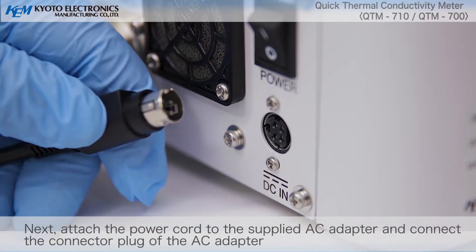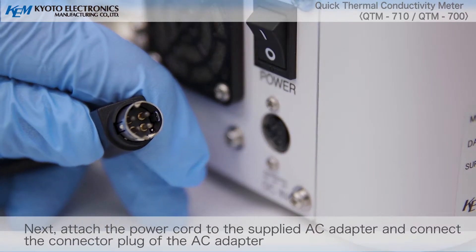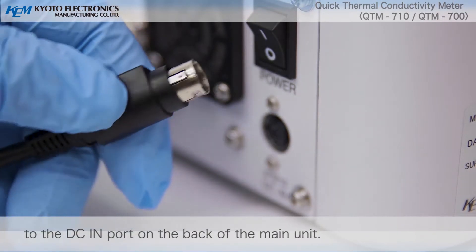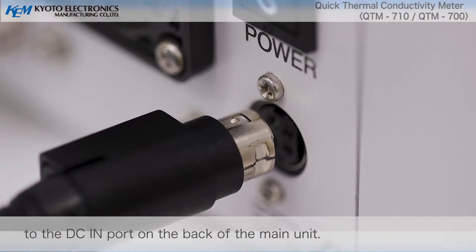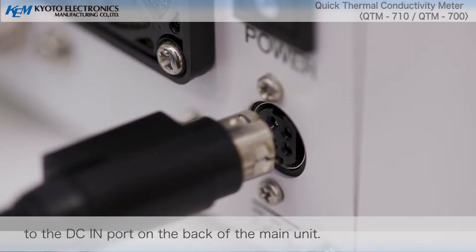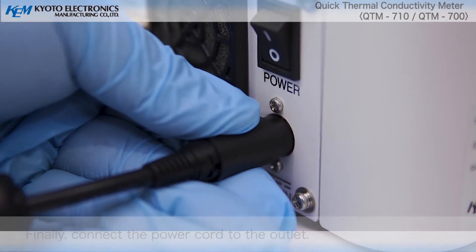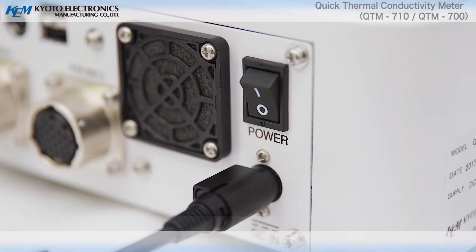Next, attach the power cord to the supplied AC adapter and connect the connector plug of the AC adapter to the DC-IN port on the back of the main unit. Finally, connect the power cord to the outlet.